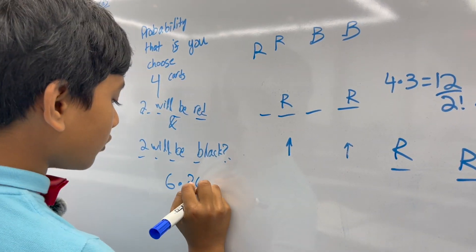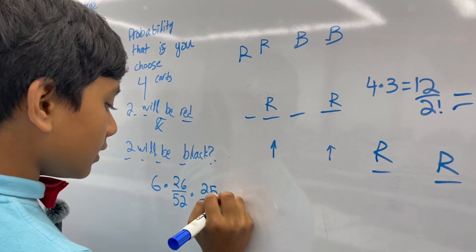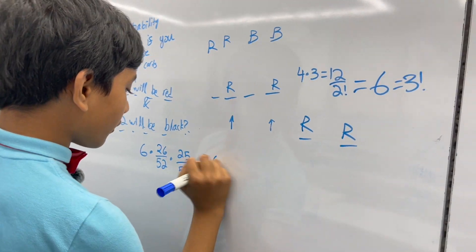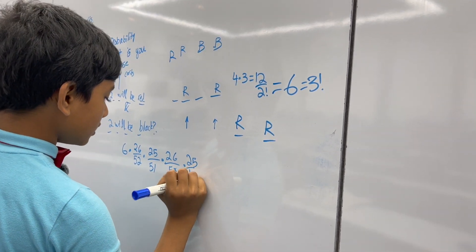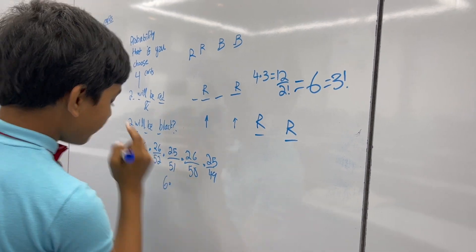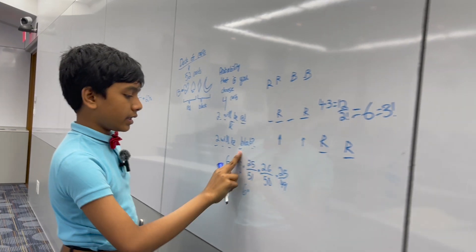26 over 52, times 25 over 51, times 26 over 50, times 25 over 49. Which is some unfathomably large number.